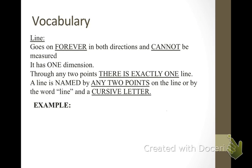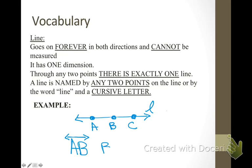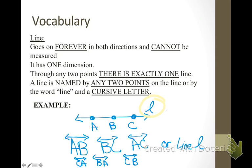The way we name a line is by any two points on the line or by using the word line and a cursive letter. On this particular line, I could call this line AB, and notice what I put over this is a little line with two arrows. Or, I could call this BC, AC, actually, I can name it using any two points on the line in any direction. Or, I can say line L. Not all the lines that you have will have a cursive letter associated with them, so most commonly, we will use two points to name a line.